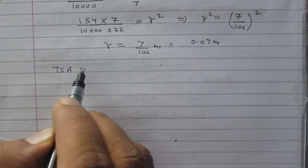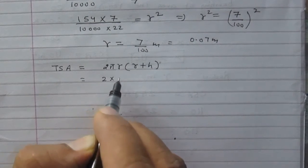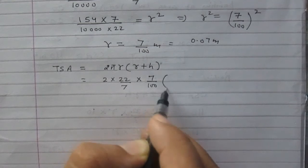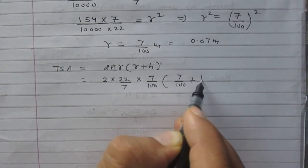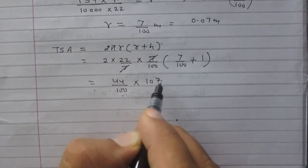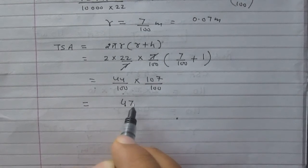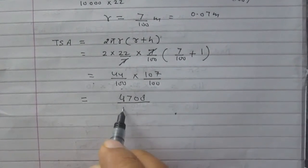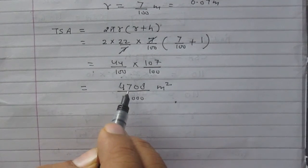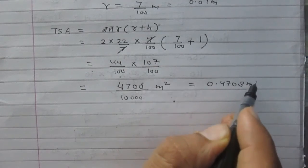The total surface area of a cylinder is 2πr(r + h). Substituting: 2 × (22/7) × (7/100) × (7/100 + 1) = (44/100) × (107/100). After calculation, the total surface area is 4708/10,000 meter square, or simply 0.4708 meter square.